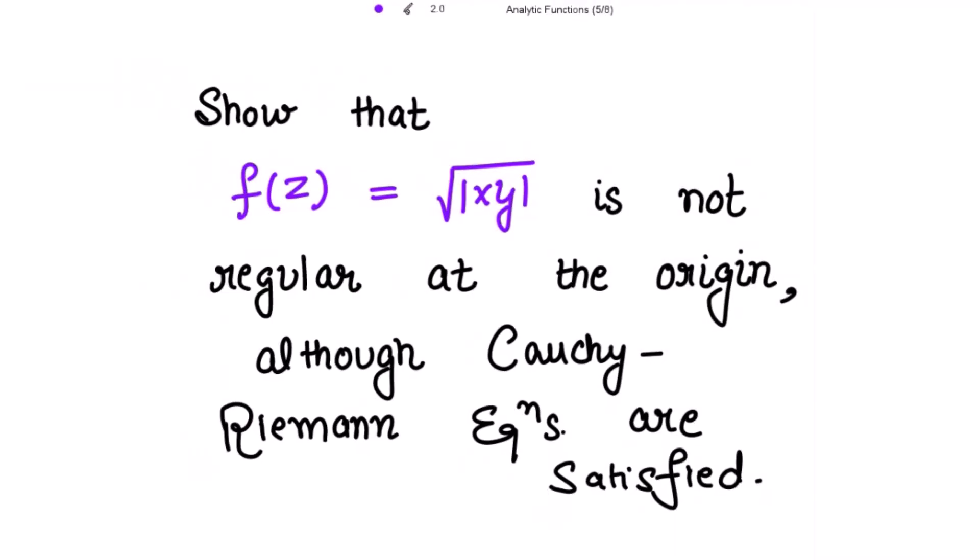We need to show that f(z) = √|xy| is not regular at the origin. Although the Cauchy-Riemann equations are satisfied, we have to show that the derivative of f(z) at the origin does not exist. This is what it means for the function to not be regular at the origin. Let's start with the proof.